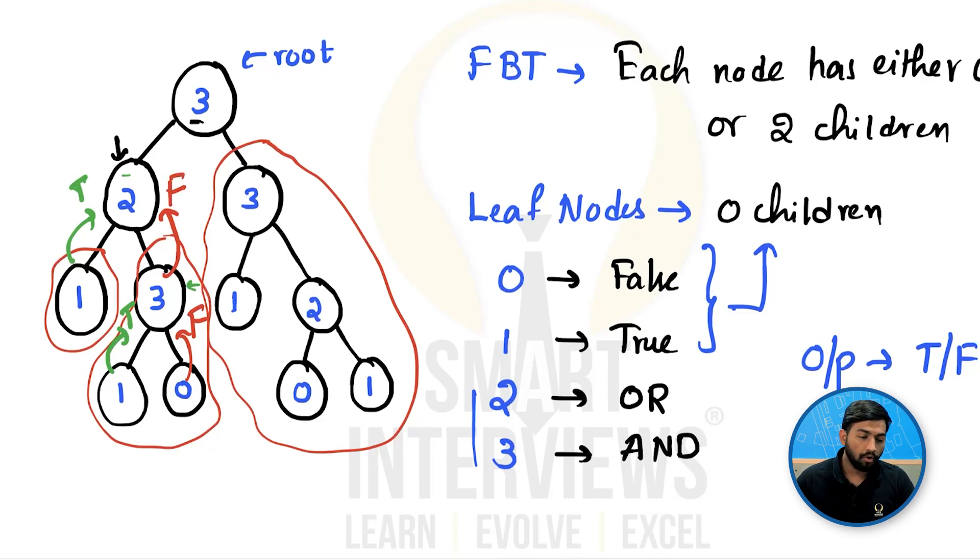Now for the node 2. 2 is OR. From left side, we are getting true. From right side, we are getting false. True OR false is true. So the result for the left subtree is true and we pass back true.